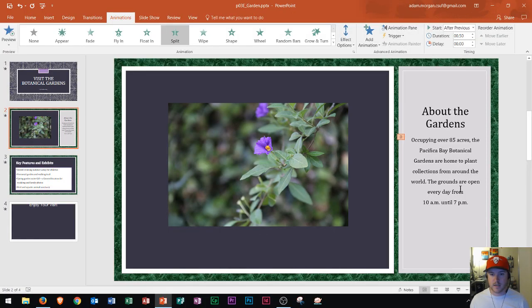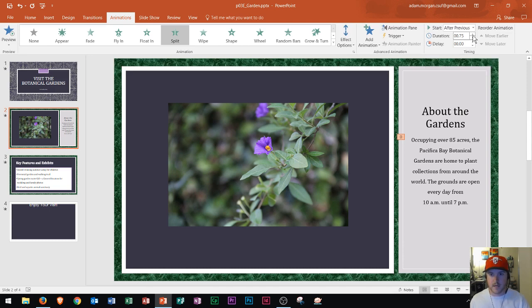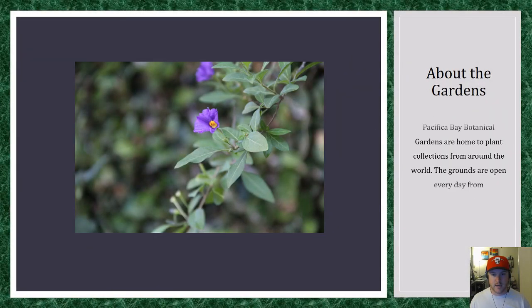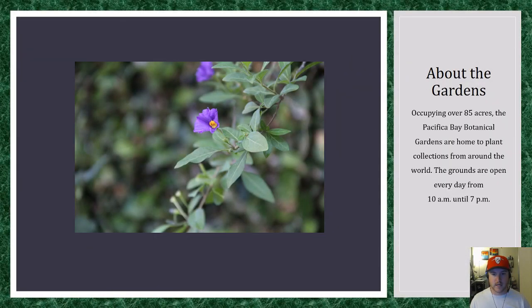Let's say that this animation appeared too quickly. You'll notice in the Timing group that it was set to 0.50 — that's in seconds. So if I increase that to one second, you'll notice that if I display the presentation one more time, it now takes a second instead of half a second for that paragraph to display.